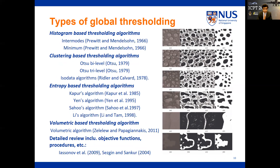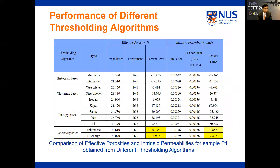The volumetric method was introduced by Professor Papagianakis, in which the threshold value is obtained by calibrating the effective porosity with respect to laboratory porosity results. These are some of the results from our study for different thresholding algorithms for porosity and permeability.